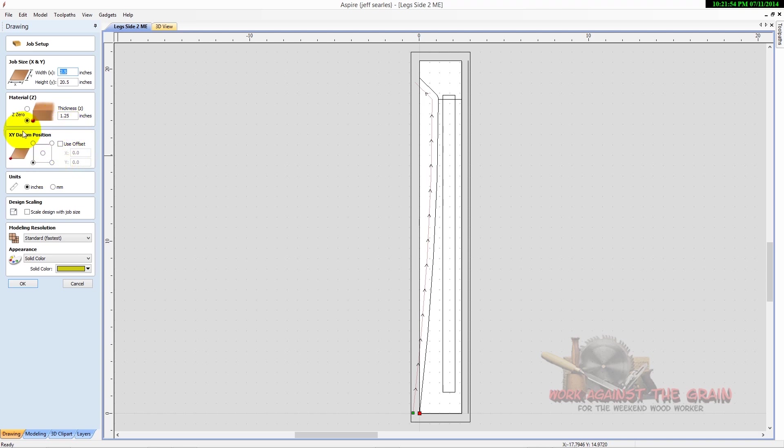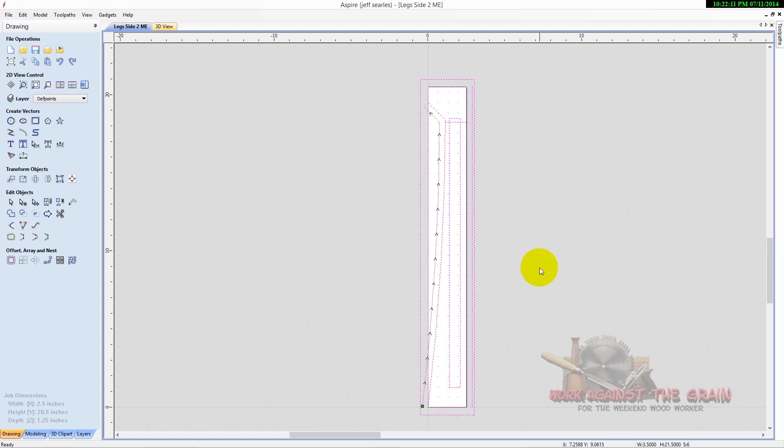And then of course XY datum lower left, we're going to work in inches. Now again, I am working a 2.5 inch piece wide. This vector here is a 3.5 inch wide piece, and you'll see when we get to the machine that I'm starting with a 3.5 inch wide material block.